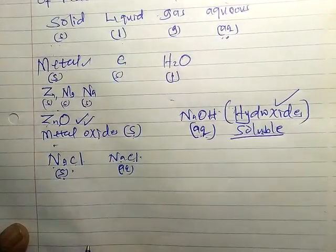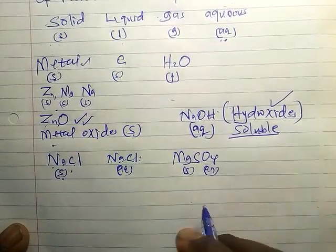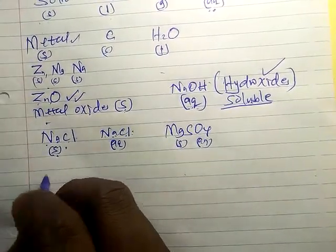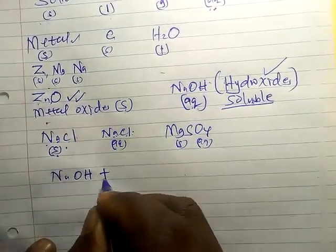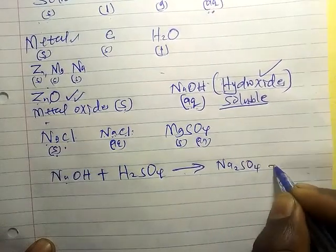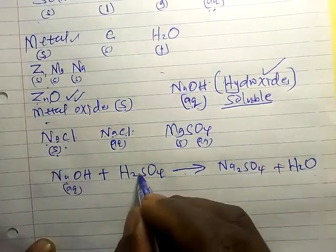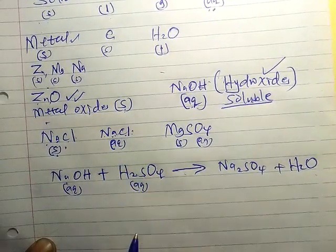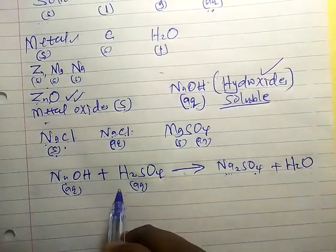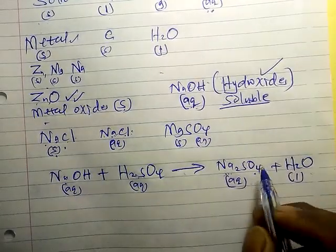Sodium chloride or magnesium sulfate can be a solid or aqueous — it depends on whether you are told it is a solution or a solid. If it is a solid, put S. For example, writing an equation: sodium hydroxide plus sulfuric acid, which reforms sodium sulfate plus water. Hydroxide is aqueous; a dilute acid is aqueous. Since they are in solution form, the products should also be aqueous. Sodium sulfate here is aqueous, and water is liquid.